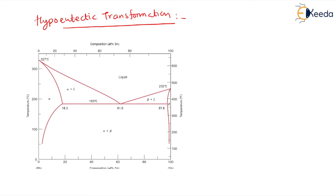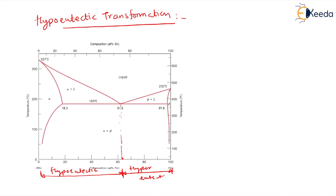In the previous video we have seen the eutectic transformation. Now we are seeing the Hypoeutectic Transformation. We are having here the eutectic point. From 0% up to this point is the Hypoeutectic region, and up to the extreme right from the eutectic, that is the Hypereutectic region. We have seen the eutectic transformation — how the microstructure looks in the eutectic, that is a layer-by-layer lamellar structure. Now we are interested in this Hypoeutectic region and we will go for this Hypoeutectic Transformation.